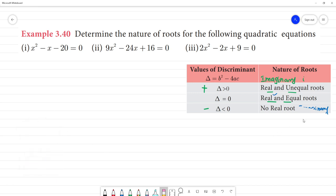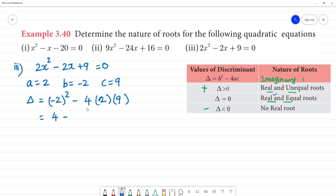Third one. 2x square minus 2x plus 9 equal to 0. Here a equals 2, b equals minus 2, c equals 9. So delta equal to b square minus 4ac. Minus 2 the whole square is 4. Minus 4 times 2 times 9 is 72. 4 minus 72 is minus 68.